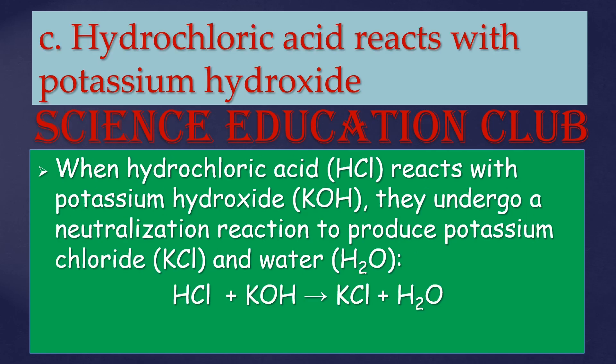Hydrochloric acid reacts with potassium hydroxide: when hydrochloric acid reacts with potassium hydroxide, they undergo a neutralization reaction to produce potassium chloride and water. HCl + KOH → KCl + H₂O.